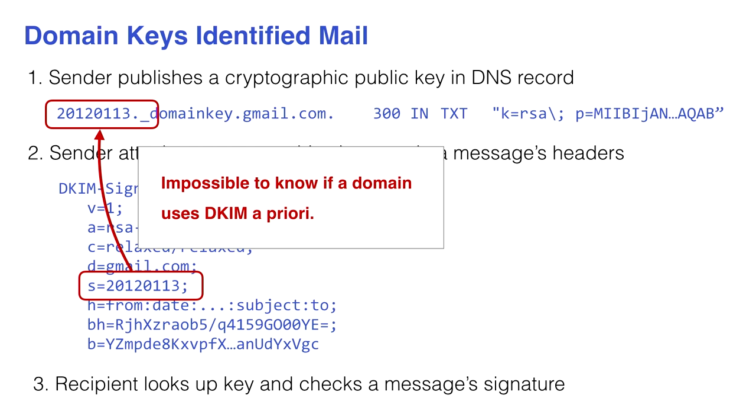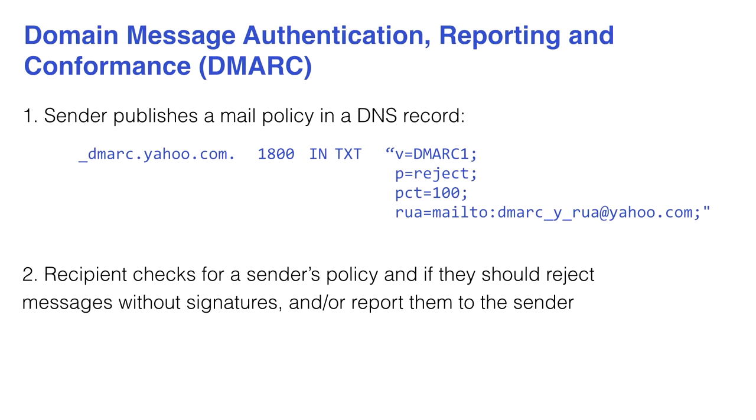DKIM haben wir eingesetzt, aber es hat diese fatale und eigentlich offensichtliche Schwäche: jeder Angreifer kann eine eigene Signatur verwenden. Die meisten E-Mail-Provider kommen damit zurecht, indem sie die Antworten der ganzen E-Mail-Server cachen und eine Checkliste abgehen, ob die Nachrichten eine entsprechende Header und Signatur haben, um das normale Verhalten von E-Mail-Servern zu überwachen.